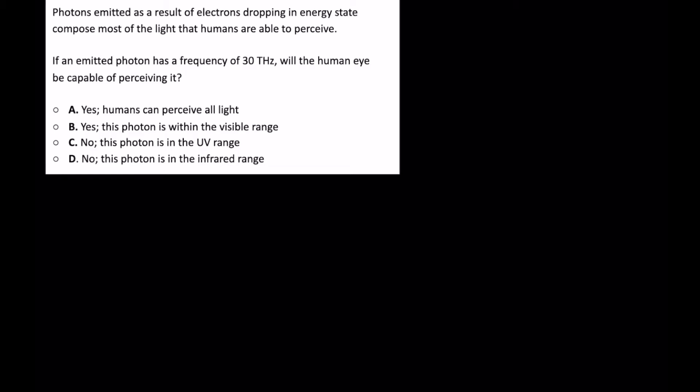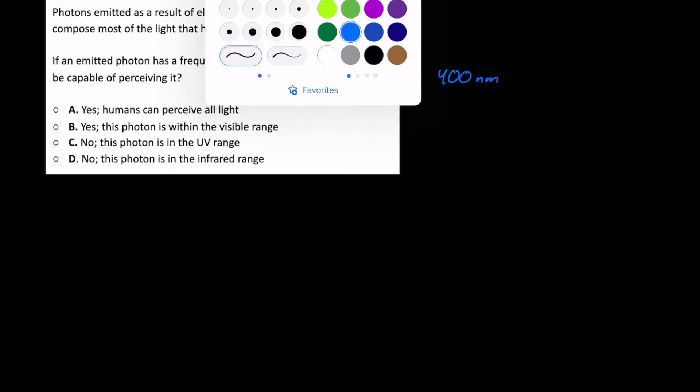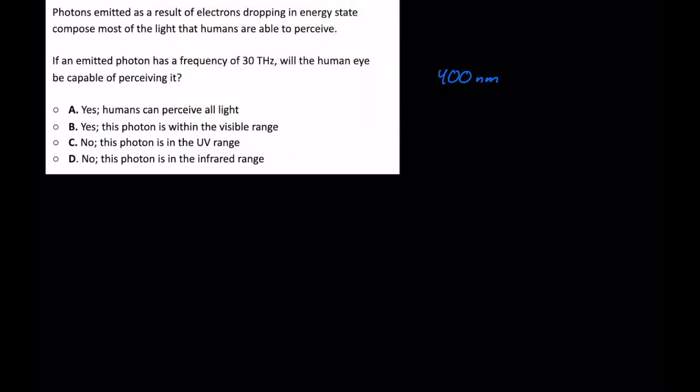First things first, we need to know, background knowledge, that the visible light spectrum is going from 400 nanometers to 700 nanometers, blue or violet to red respectively there.